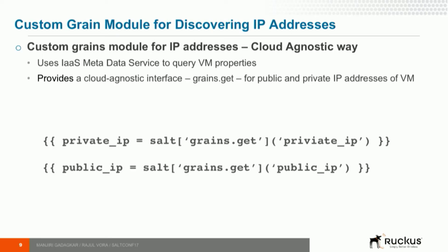The idea of IP addresses is different in the cloud — you have a private IP address and an external IP address. In GCP or AWS you have external and internal IP addresses; in OpenStack you have a floating IP and an internal IP. You don't want your Salt code to have to worry about all these details. So what we do is write a Salt custom grain that hides this complexity. All you do is call grains.get private_IP, and that custom grain code figures out how to look at the metadata service and gives you the correct IP address.